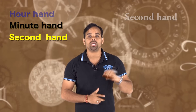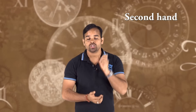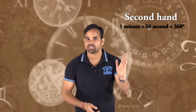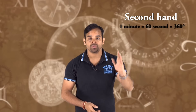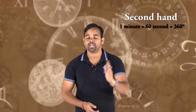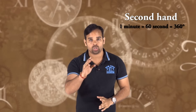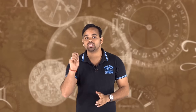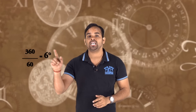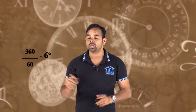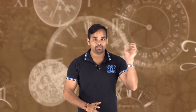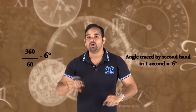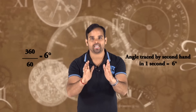Now we talk about the second hand. One minute is equal to 60 seconds, and one full rotation is 360 degrees. So 1 second equals 360 divided by 60, which equals 6 degrees. So to remember: the minute hand moves 6 degrees per minute, and the second hand also moves 6 degrees per second.